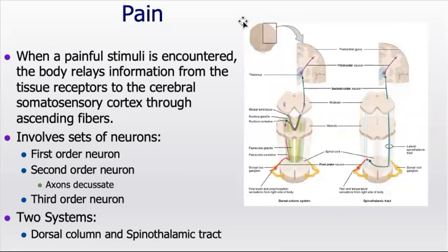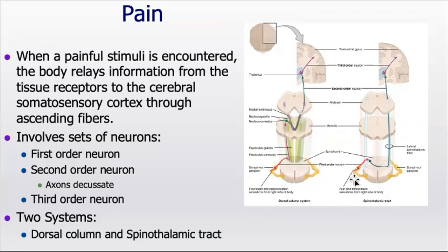This image is vitally important for you to understand — this is essentially how we sense anything. You have two systems: the spinal thalamic tract and the dorsal column system. These are two separate pain pathways that transmit different information. The spinal thalamic tract transmits pain and temperature sensation, while the dorsal column system transmits fine touch and proprioception. Can anyone think why having two different pathways can be important clinically and how we can use that to our advantage?